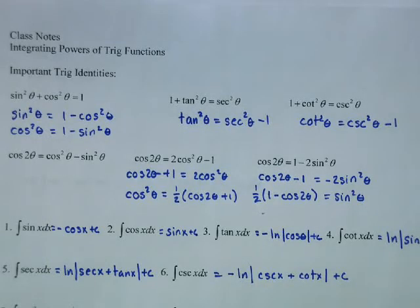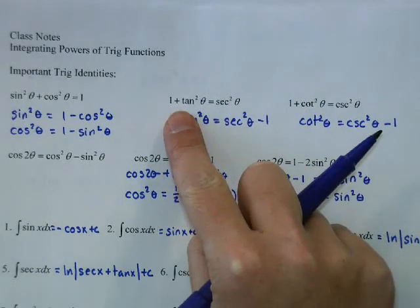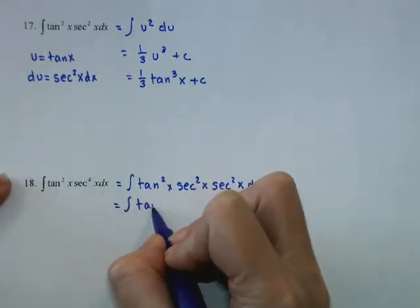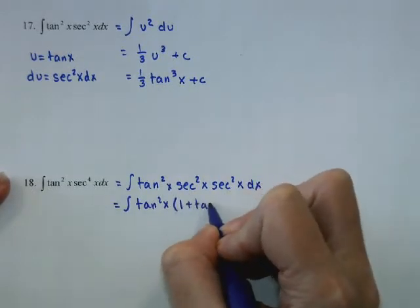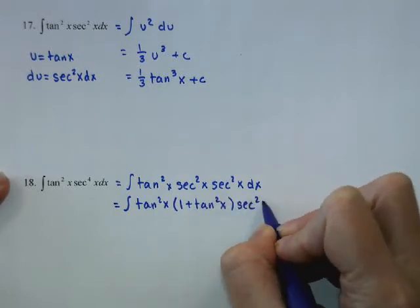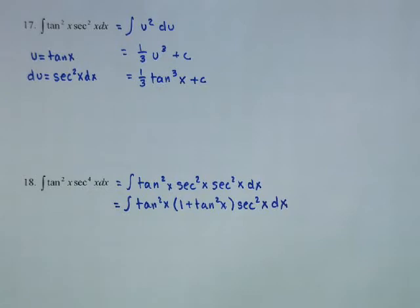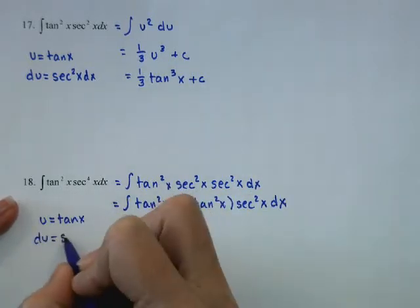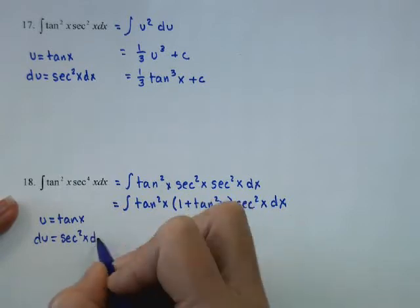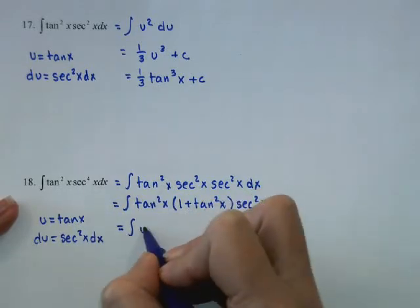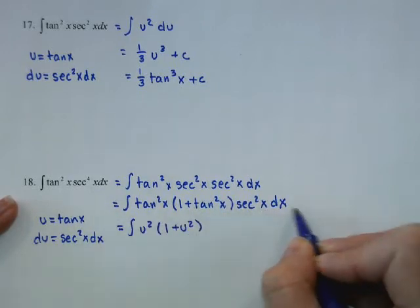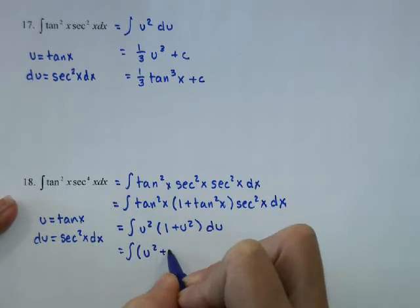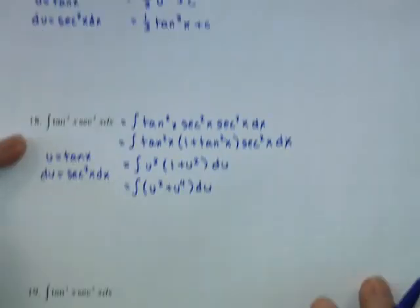Using the identity secant squared equals 1 plus tangent squared, for the integral of tangent squared times secant to the fourth, replace secant squared with (1 plus tangent squared). Let u equal tangent, du equals secant squared dx. The integral becomes u squared times (1 plus u squared) du. Distributing gives u squared plus u to the fourth. Integrating yields one third u cubed plus one fifth u to the fifth plus C, then replace with tangent.